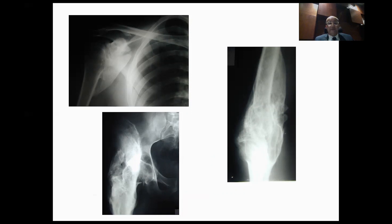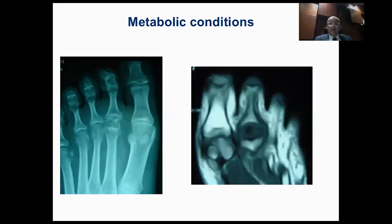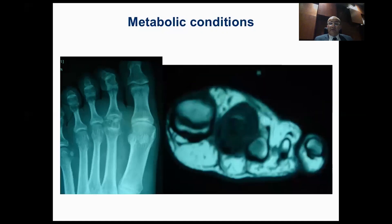Myositis ossificans or heterotopic ossification can have different patterns, such as patterns common with traumatic brain injuries in ICU patients, which can fuse adjacent joints. Metabolic conditions can also mimic neoplasm. An osteolytic lesion on the head of the second metacarpal could pass as a giant cell tumor, whereas biopsy revealed gouty arthritis.